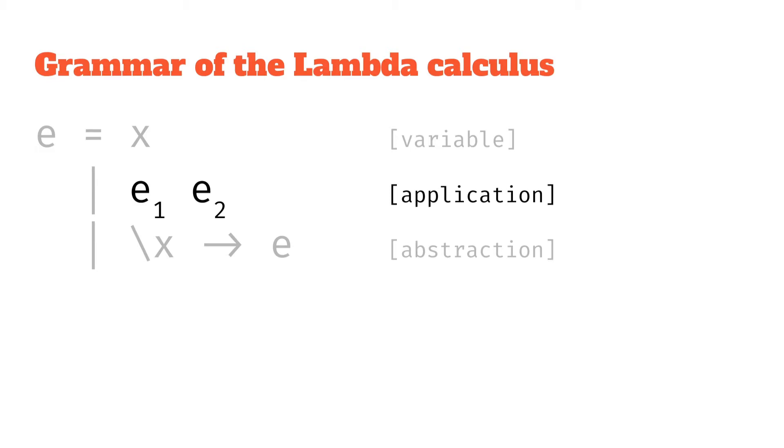And then the third type of expression we looked at is OR, it can be a function abstraction, that's where we have the kind of backslash, the parameter, arrow, and then the function body, which is another expression, E. And that E again is referencing back to, it can be another expression.